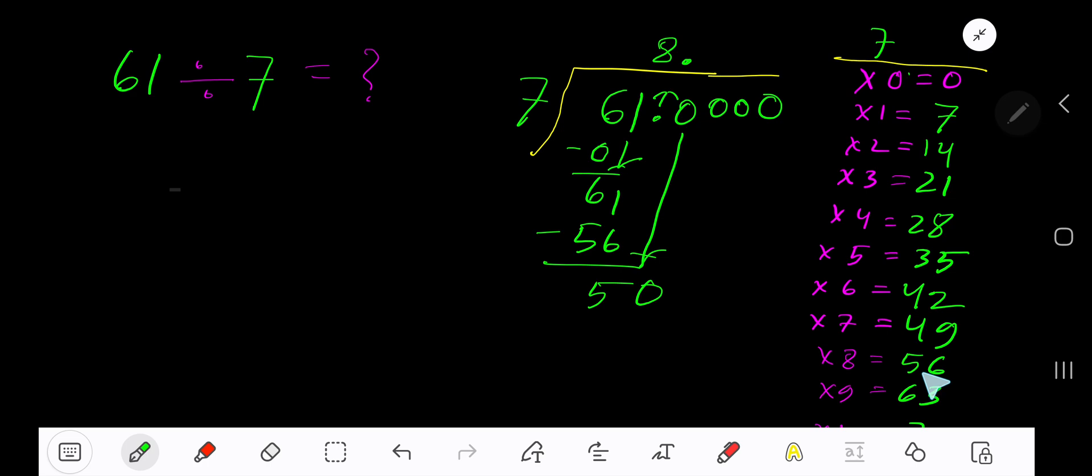8 times 56, which is greater, so 7 times. 7 times 7 is 49. Subtract to get 1. Bring down another 0. 7 goes into 10 how many times? 2 times 14, which is greater, so 1 time. 1 times 7 is 7. Subtract to get 3.